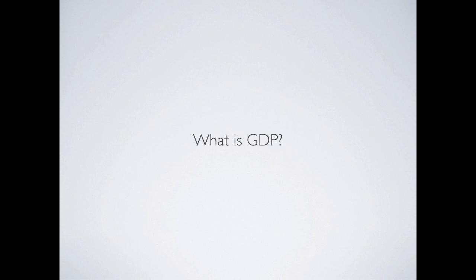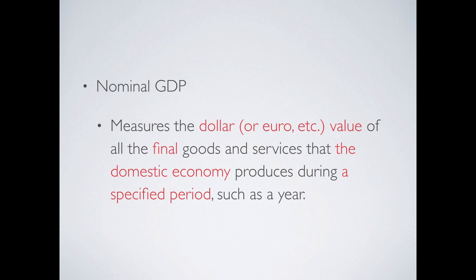We start from GDP. What is GDP? First, start from Nominal GDP. We learned Nominal GDP in our EC101 course. Basically, it measures the dollar value of all the final goods and services that the domestic economy produces during a specified period, such as a year. In this slide, you notice there are four highlighted phrases: dollar value, final, domestic economy, and a specified period of time. We are going to go through these highlighted terms in the following lecture.